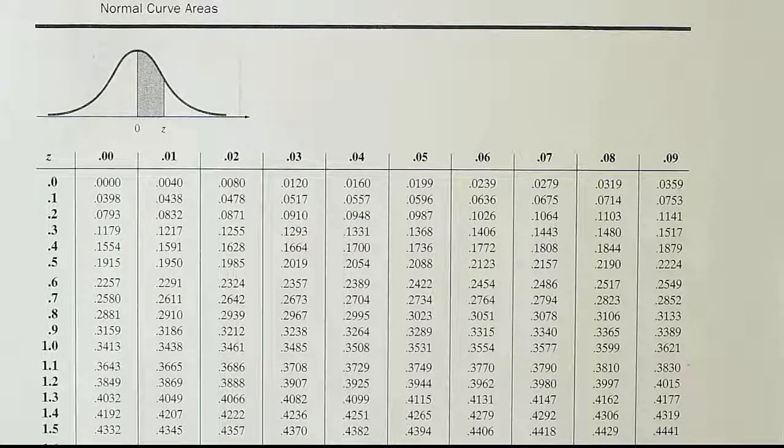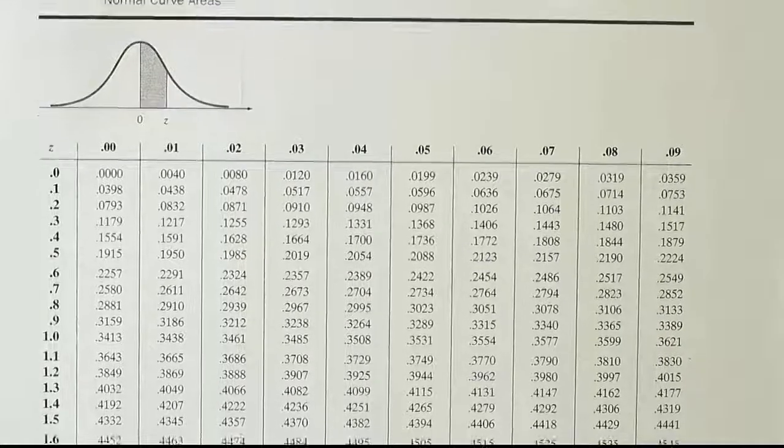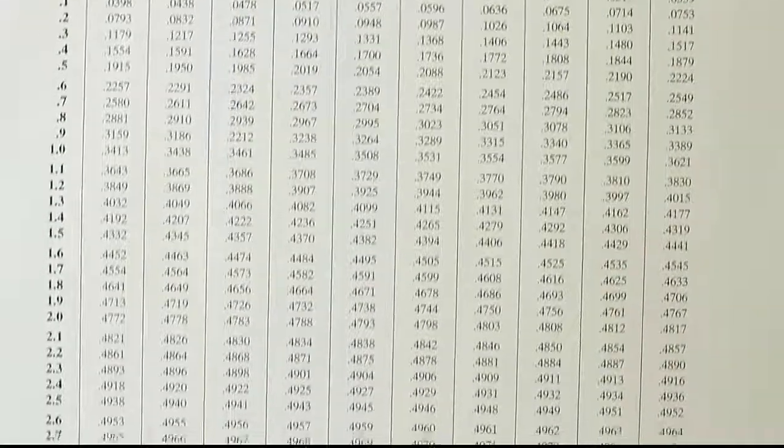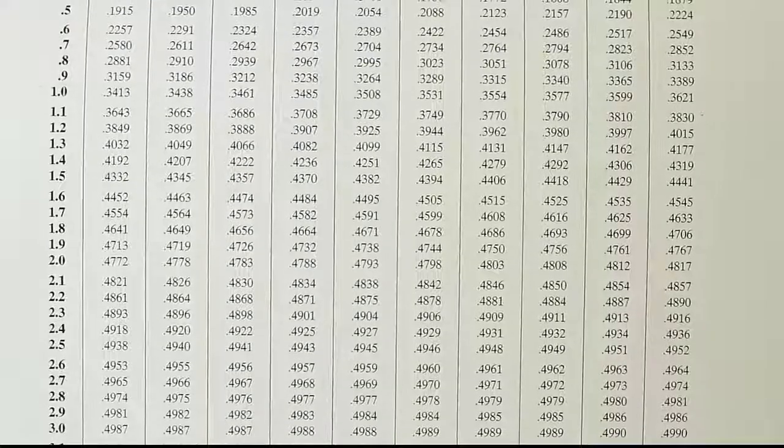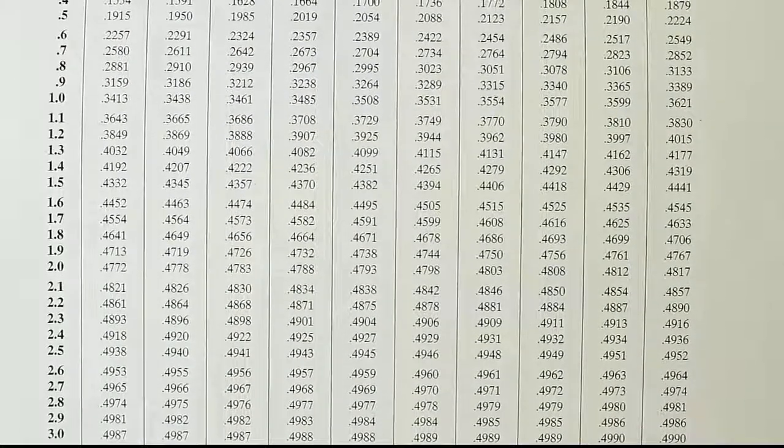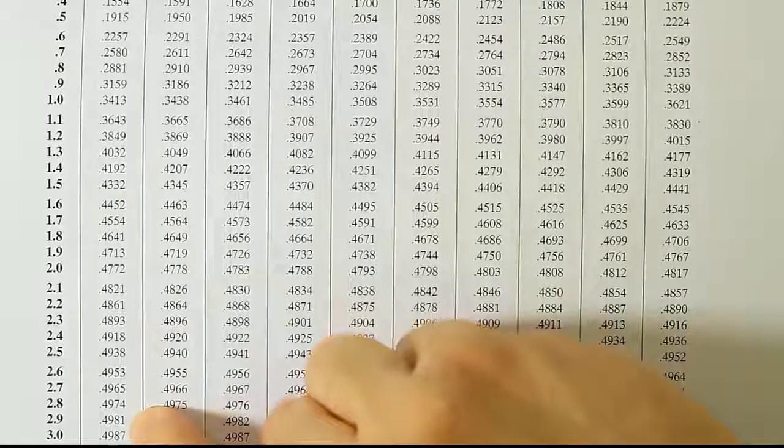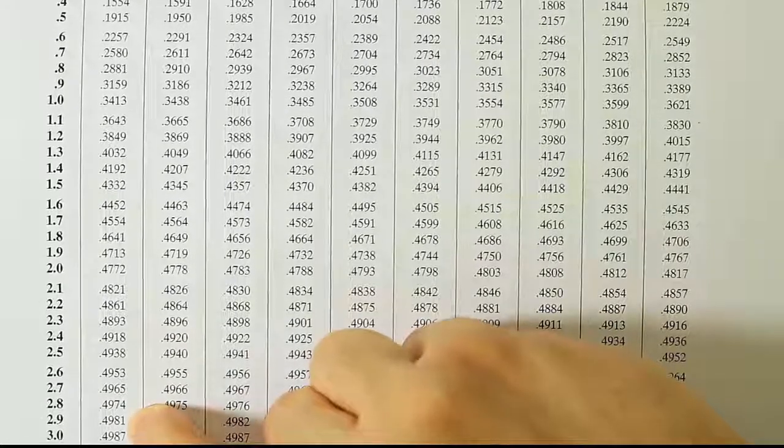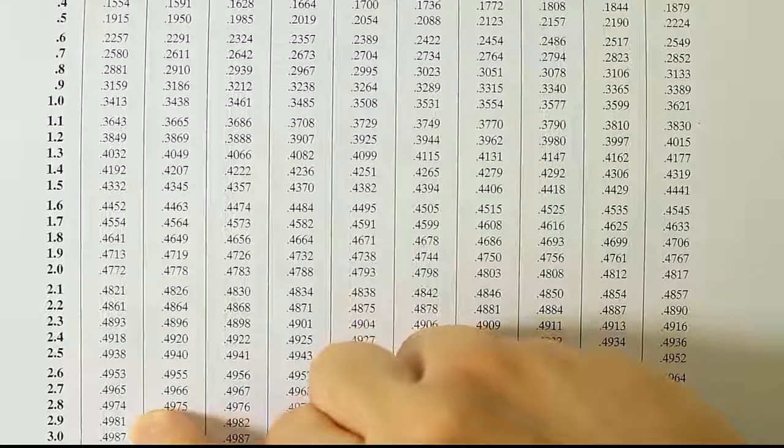Okay, so we want to look up 3.0 on the curve. We're going to have to move this curve way down to get to the 3.0 row. And there it is. And that very first number is the 3.00 position. So that number is 0.4987.